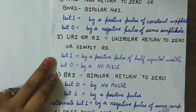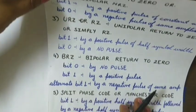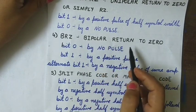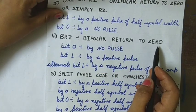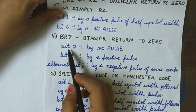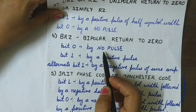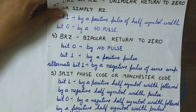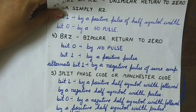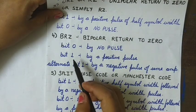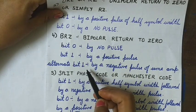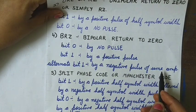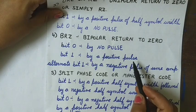The fourth one is the BRZ or bipolar return to zero. In this line coding scheme, symbol zero is transmitted by no pulse and bit one by a positive pulse. The alternate one after this is transmitted by a negative pulse of the same amplitude as the previous one.